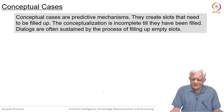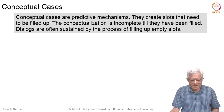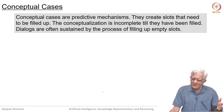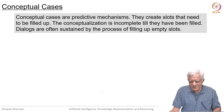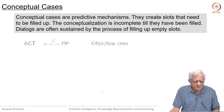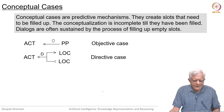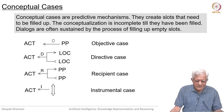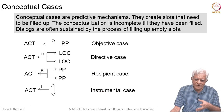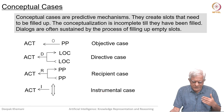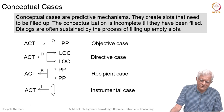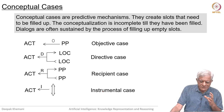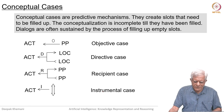Conceptual cases are predictive mechanisms — they create slots that need to be filled up. The conceptualization is incomplete till they have been filled. Dialogues are often sustained by the process of filling up empty slots. These are the cases we can talk about: the objective case, the directive case where you go from one location to another, the recipient case where a book is given from one individual to another, and the instrument case.